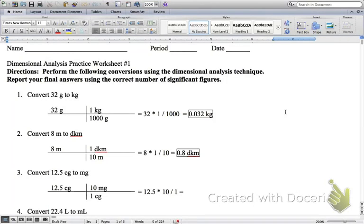All right, so we're on Dimensional Analysis Practice Worksheet number one. I've already shown you guys the Dimensional Analysis technique, and so now what we're going to do is start putting that into practice. Now if we look at problem number one, it says convert 32 grams to kilograms.